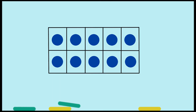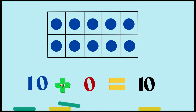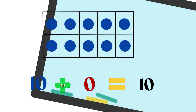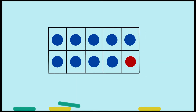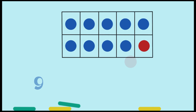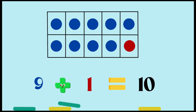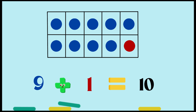There are 10 blue dots in this tens frame altogether. 10 plus 0 equals 10. Next one — here there are nine blue dots and one red dot. Nine blue dots plus one red dot also equals 10. Nine and one also make 10.